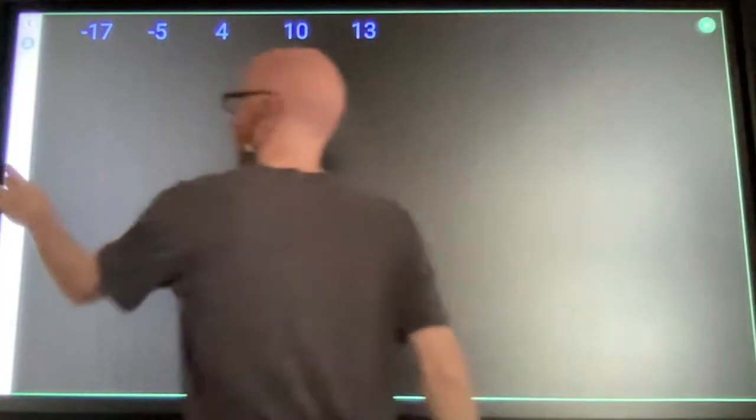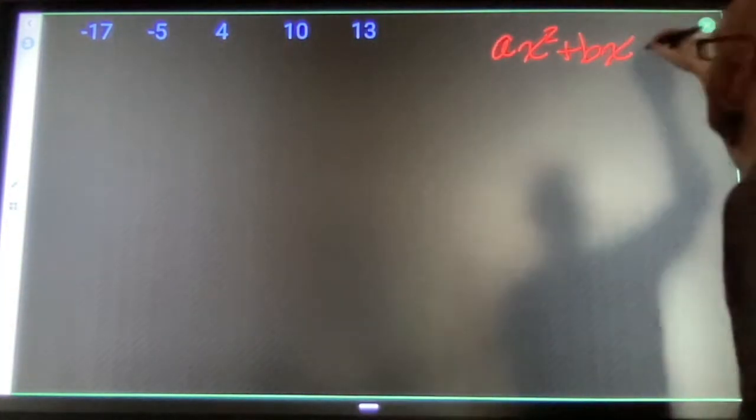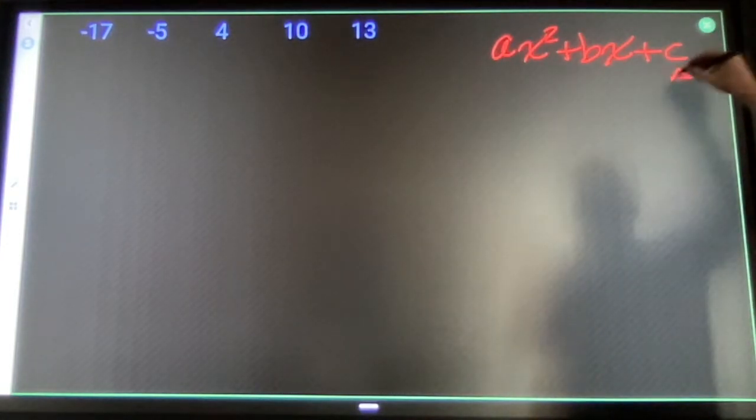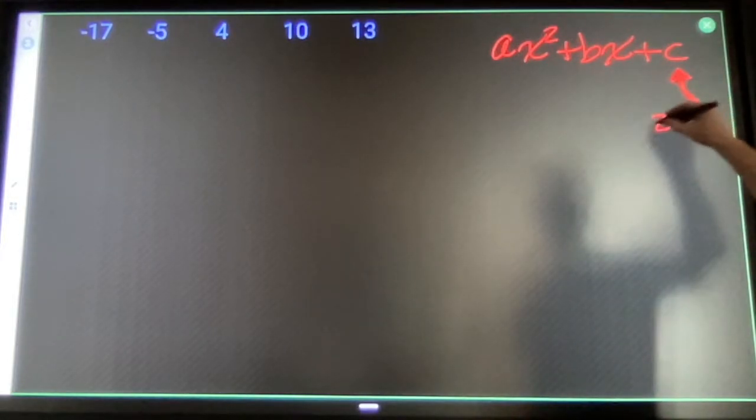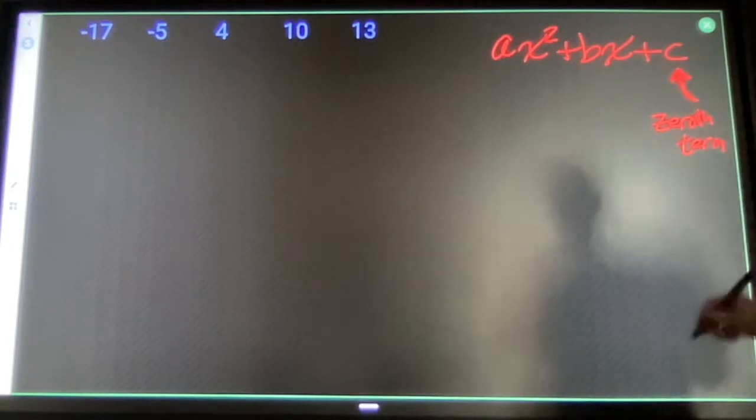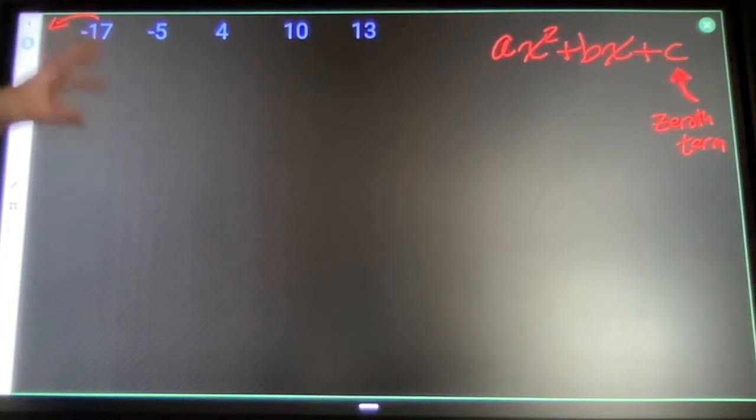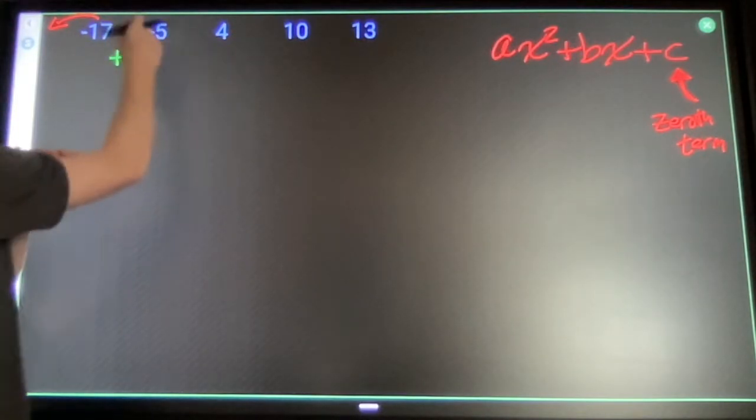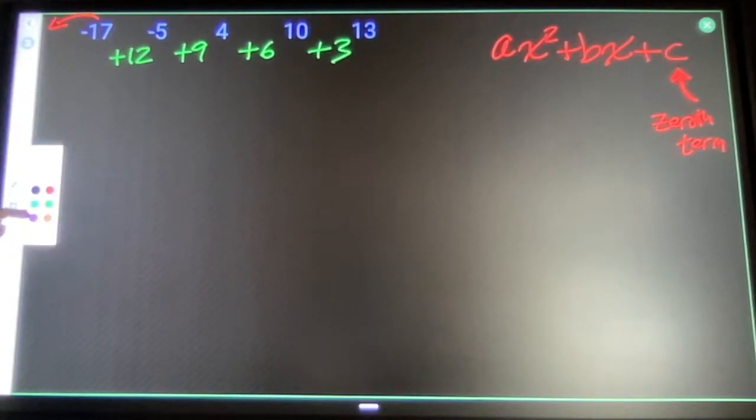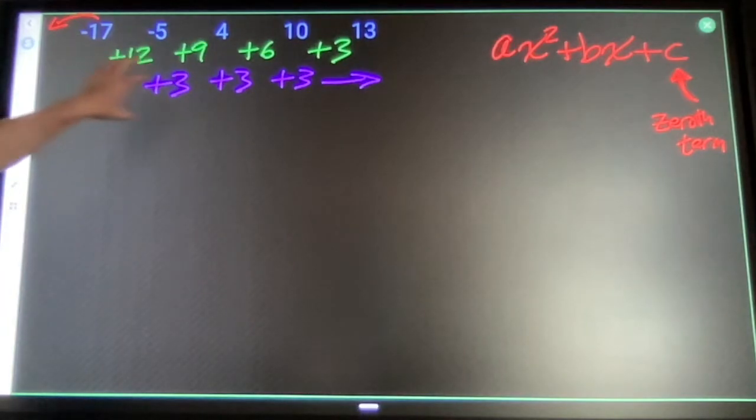So find your second difference. We're looking for an equation that has this format: some number times x squared plus some number times x plus some number. The first piece of this that we worked with is we found out that this letter c is the zeroth term of the sequence. So it's the number that comes before negative 17, which is my first term. And the way we can find the zeroth term is first find the distance from one number to the next. Find my second differences, which should be a constant on this topic. We're always adding three.